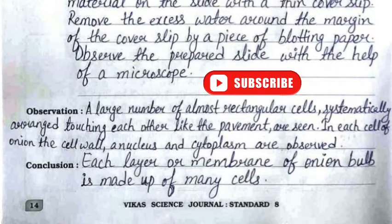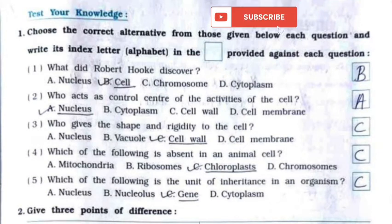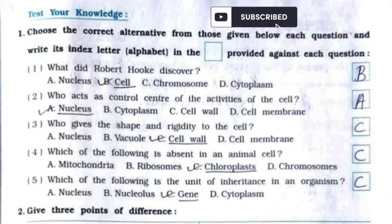Now test your knowledge. Question 1 is MCQs. First: what did Robert Hooke discover? Answer: cell. Second: who acts as the control center of the activities of the cell? Answer: nucleus. Third: who gives the shape and rigidity to the cell? Answer: cell wall.